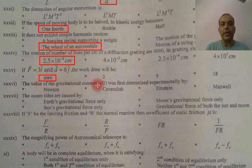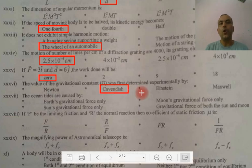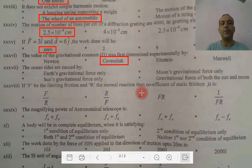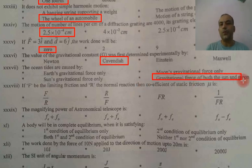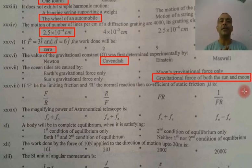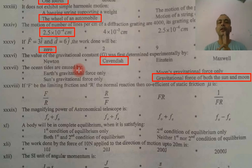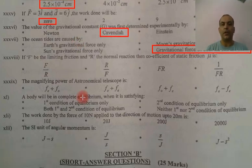The value of the gravitational constant was determined by Henry Cavendish. Regarding ocean tides — this option says it is the gravitational force of both the sun and moon. But I think for the moon's gravitational force, the answer should be correct.